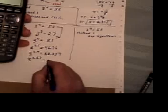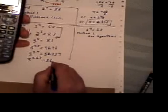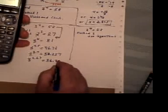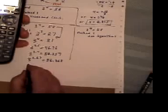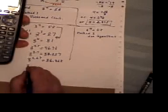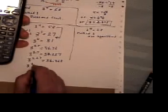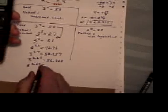So, 3 to the power 3.67 is 56.238. So, 3 to the power 3.69, 3 to the power 3.69 is 57.62.